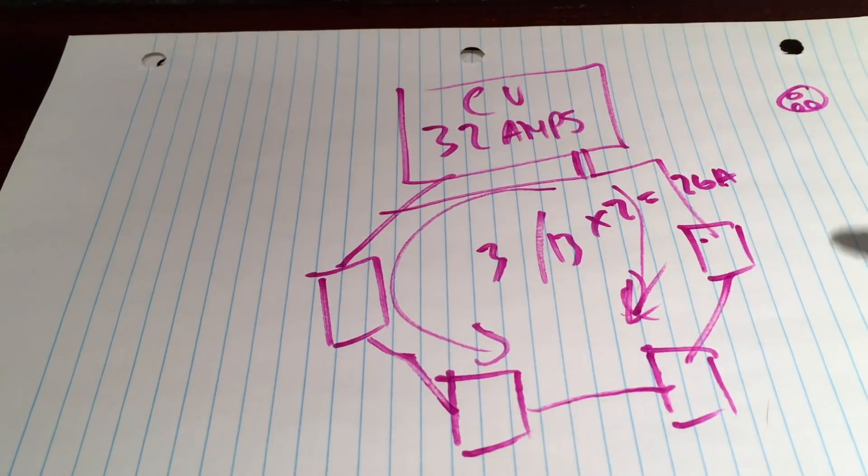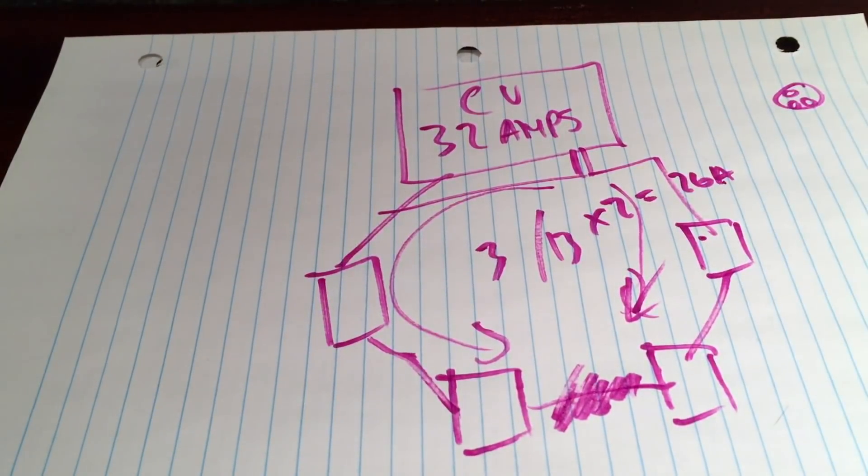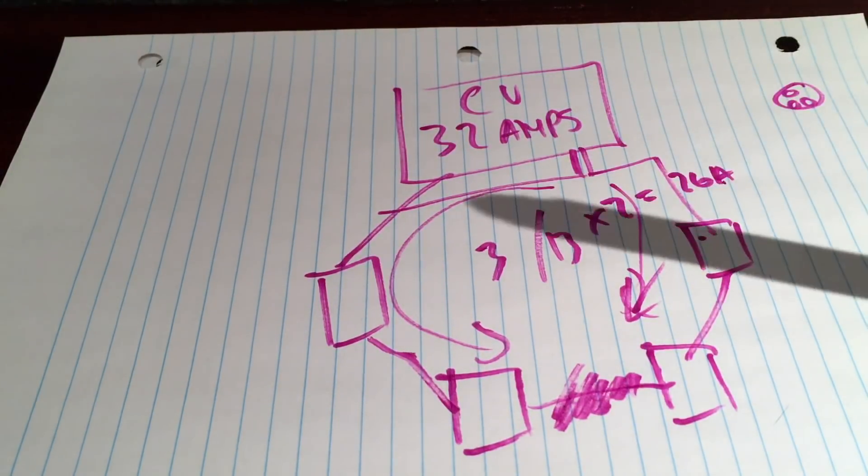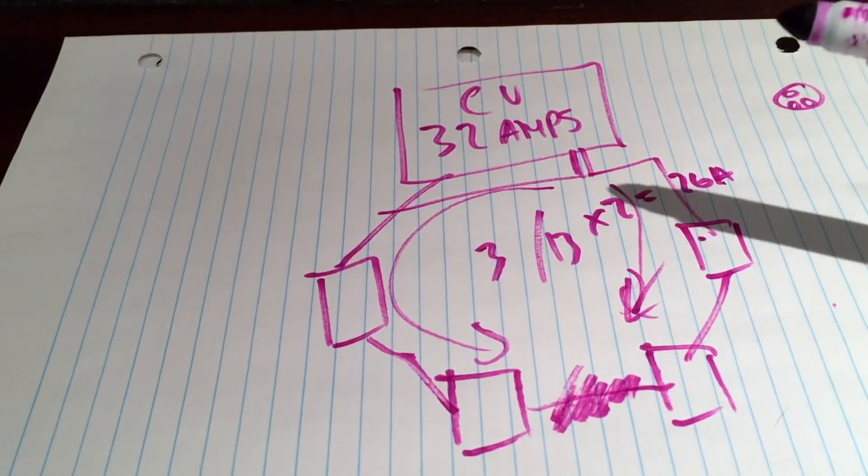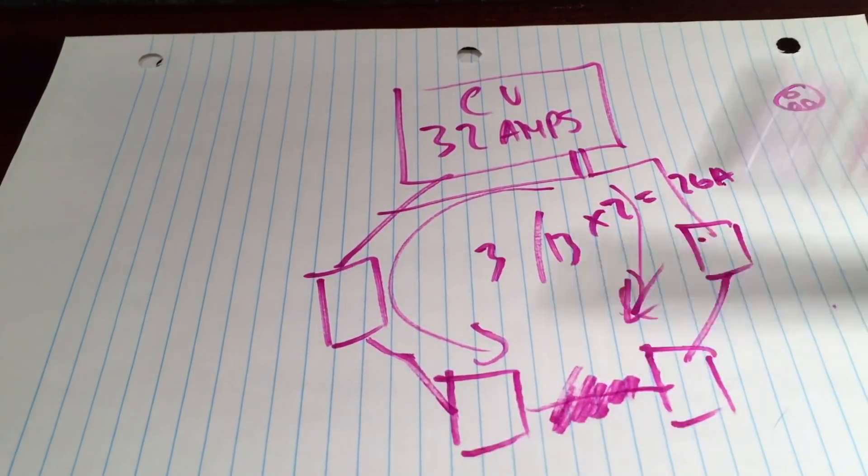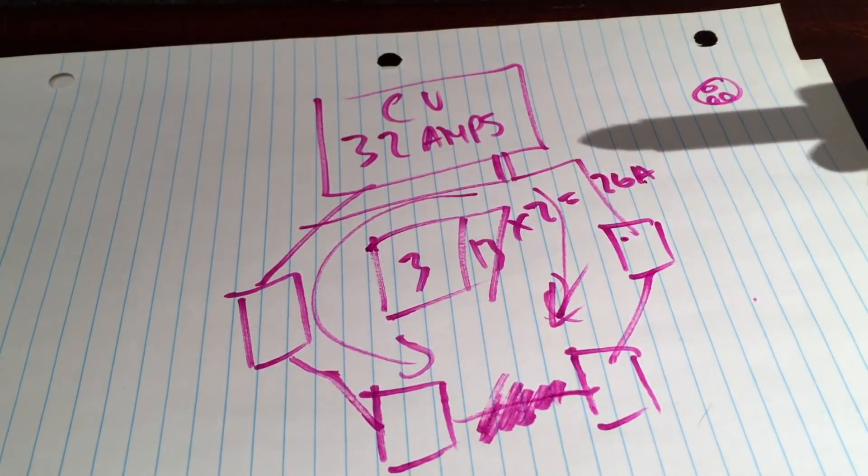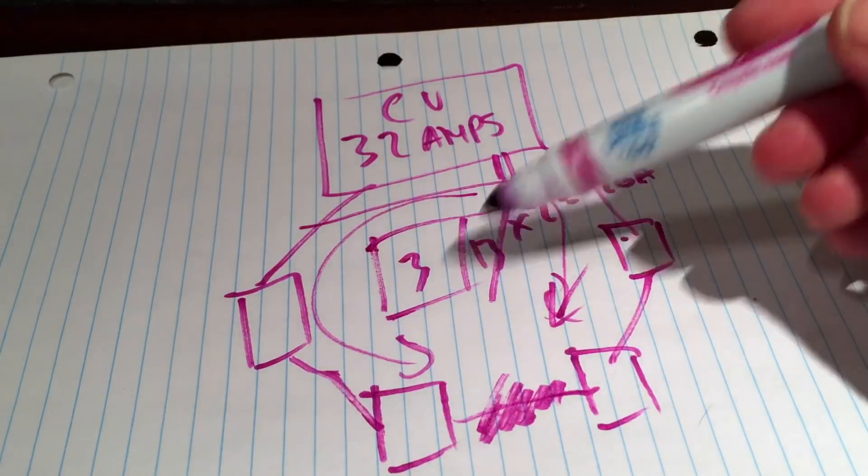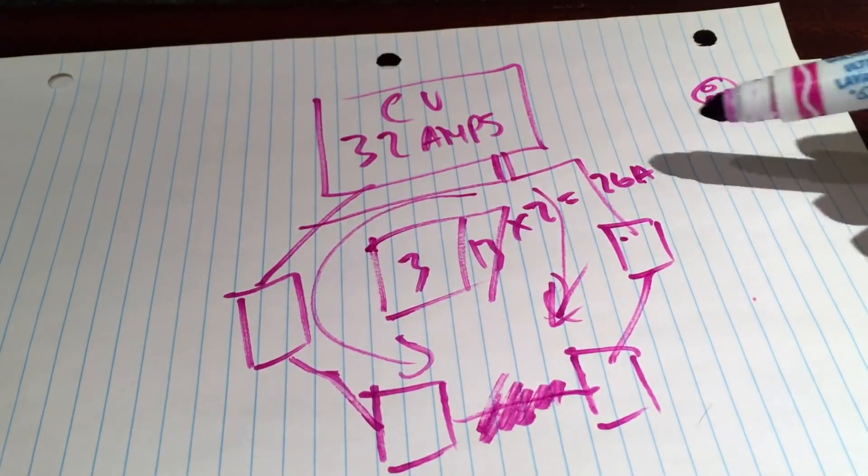So the sockets are daisy chained in the ring using relatively thinner wire than is used everywhere else, and this is the key to things. The reason for the thinner wire I'm not going to get into, but just know that the idea was it was supposed to save wire during the great rebuild after the war. This was supposed to be more efficient than what was used before. The sockets are daisy chained in a ring, and the wire is good for 26 amps, which won't be fried because the power can go around both ways.